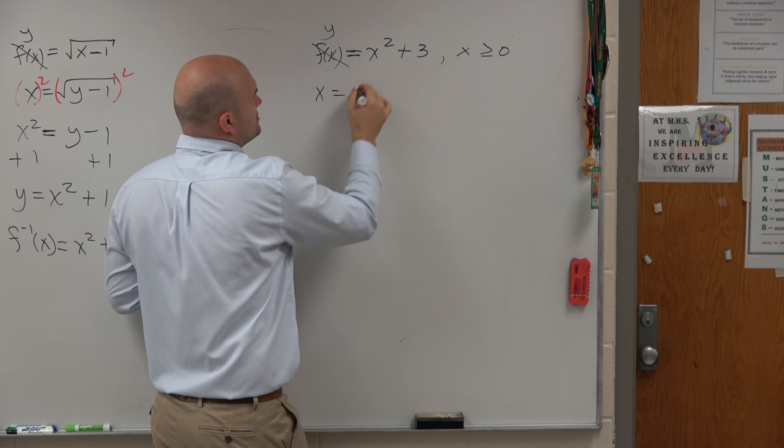So now we take f inverse, which is just going to equal the positive form of the square root of x minus 3. The reason we're only using the positive version is because we have the original restriction where x has to be greater than or equal to 0.